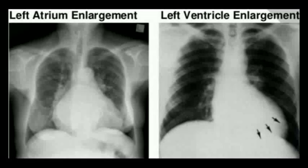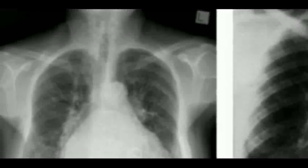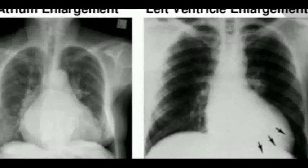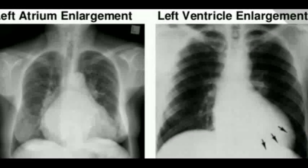Now we'll discuss enlargement of each chamber of the heart. This is left atrial enlargement — the left atrium is present at the mitral area, so it is seen in mitral stenosis or mitral regurgitation. This is the X-ray of left atrial enlargement. Then we have left ventricular enlargement — left ventricular enlargement cannot always mean it is a pathology, as it is also present in athletes.